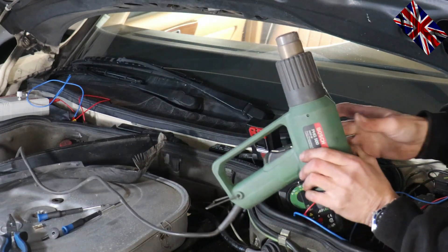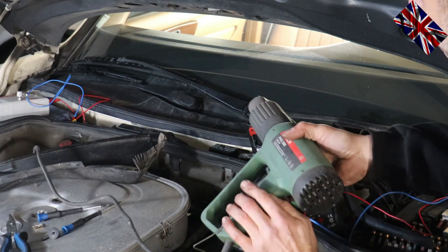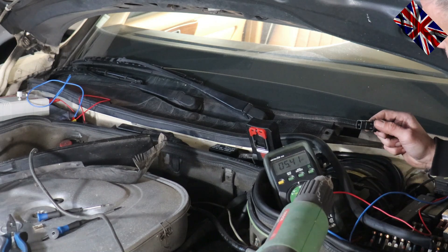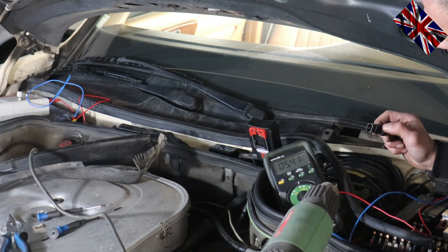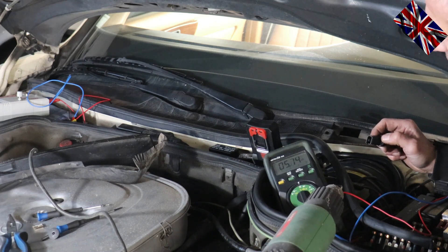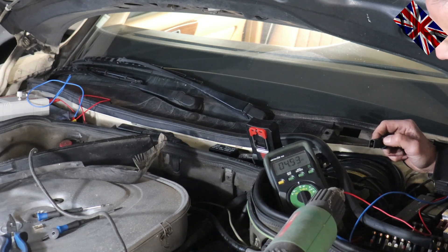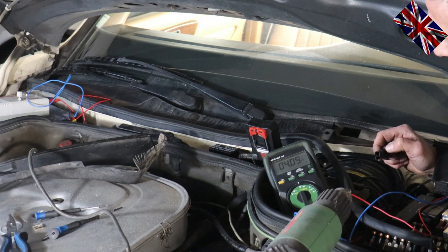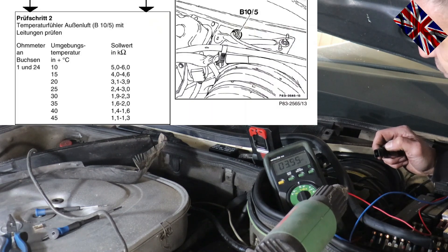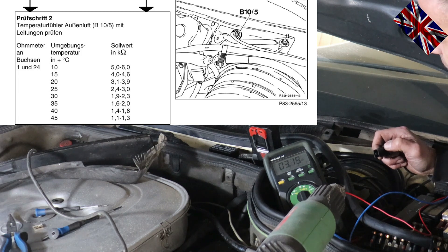I'll switch on my heat gun, keeping it about 30 centimeters away from the sensor. Watch how the resistance is dropping on the display. The drop-down chart is on the left-hand side. This is the fastest and easiest way to look for culprits if you get weird temperatures on your cluster display.